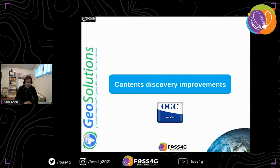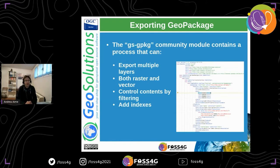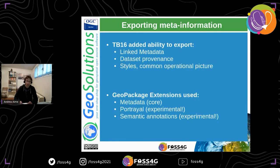Let's go into content discoverability improvements. The GeoServer WPS GeoPackage process was already able to export complex GeoPackages with multiple layers — a mix of raster and vector — controlling contents by filtering and deciding whether or not to add indexes. However, it did not add any meta information. During Testbed 16, we added the ability to export linked metadata, dataset provenance, styles, and common operational picture.